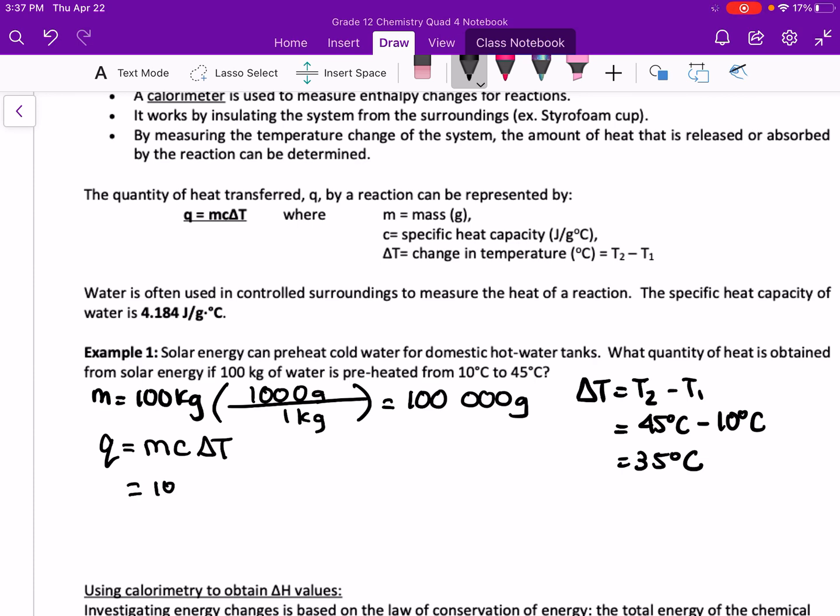Our mass is 100,000 grams times 4.184 joules per gram degree Celsius times 35 degrees Celsius. This value, 4.184, is the specific heat capacity of water.